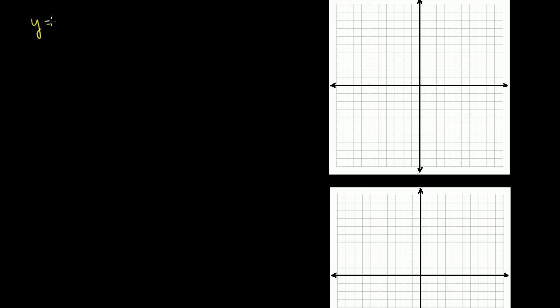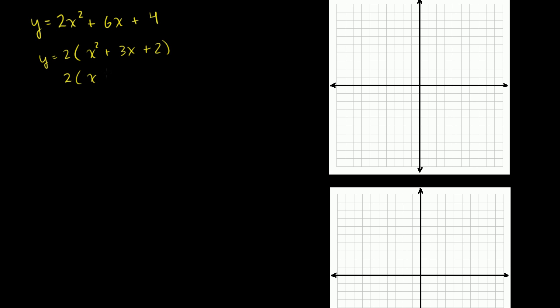Let's say we have y is equal to 2x squared plus 6x plus 4. The thing that immediately jumps out is that I can factor a 2 out of everything, giving y is equal to 2 times x squared plus 3x plus 2. This we can factor in a straightforward way: 2 times 1 is 2, and 2 plus 1 is 3, so this is 2 times x plus 2 times x plus 1.